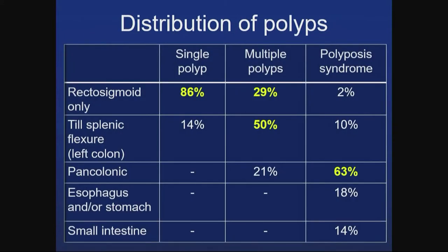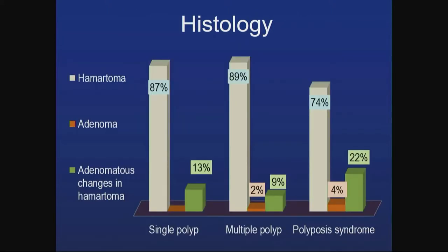Looking at polyp distribution, single polyps were predominantly in the rectosigmoid at 86%, and all were in the left side of the colon. 80% of multiple polyps were also on the left side, while 63% of polyposis syndrome patients had pan-colonic disease. In histology, the majority in all three groups were hamartomatous, while 13% in single polyp, 9% in multiple polyp, and 22% in polyposis syndrome had additional adenomatous changes.